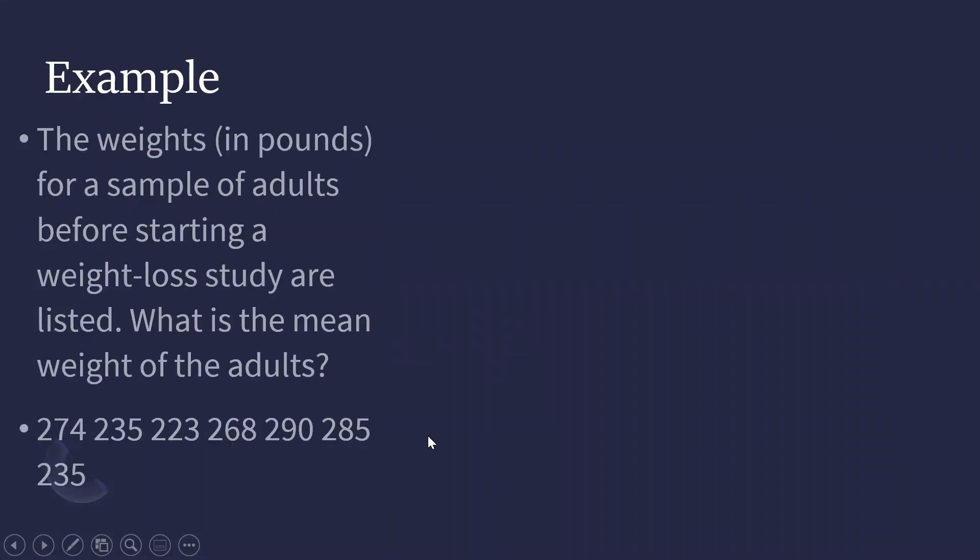Suppose we have this example number one. The weights in pounds for a sample of adults before starting a weight loss study are listed. What is the mean weight of the adults? The formula for the mean, x bar, is equal to the summation of x over n. The number of samples here is 7.